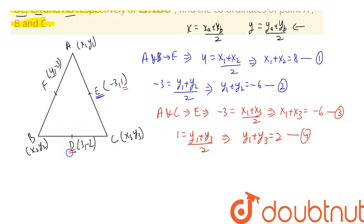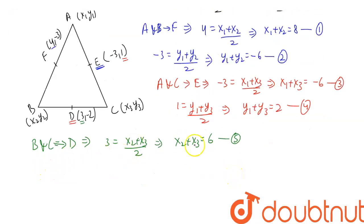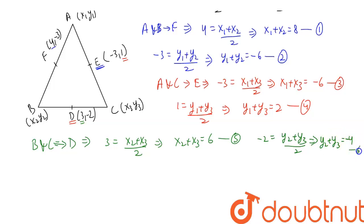Point D is the midpoint of B and C. Taking the x-coordinate: 3 = (x2 + x3) / 2, giving us x2 + x3 = 6. This is equation 5. Similarly, the y-coordinate: -2 = (y2 + y3) / 2, so y2 + y3 = -4. This is equation 6.